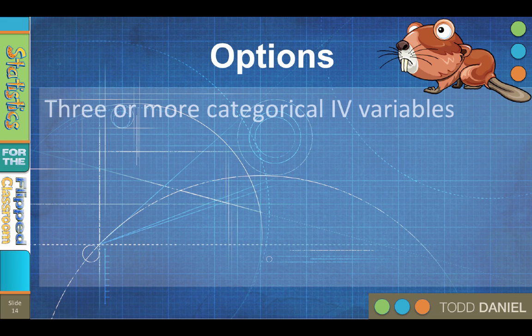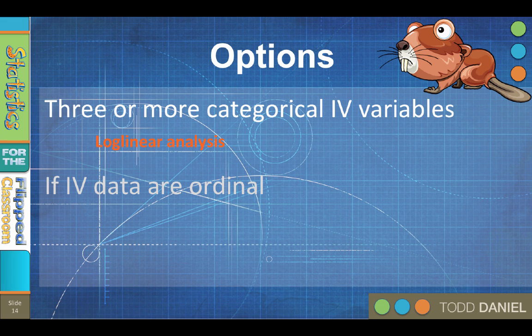If you have three or more categorical independent variables, use log-linear analysis. If the independent variable is ordinal and you want to keep the order — in other words, not treat them as nominal — then you would use Spearman's rank-order correlation, or you could use Kendall's tau.